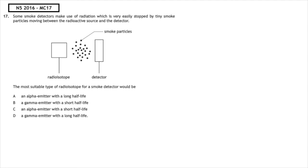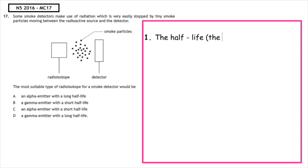This past paper question is from the National 5, 2016, multiple-choice 17. Some smoke detectors make use of radiation which is very easily stopped by tiny smoke particles moving between the radioactive source and the detector. The most suitable type of radioisotope for a smoke detector would be...